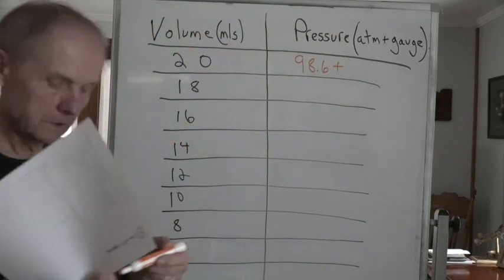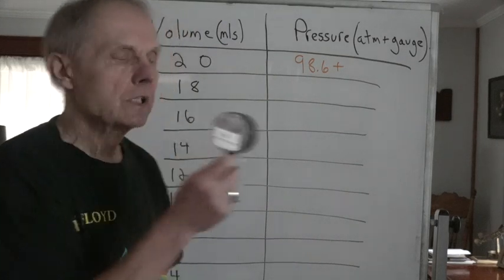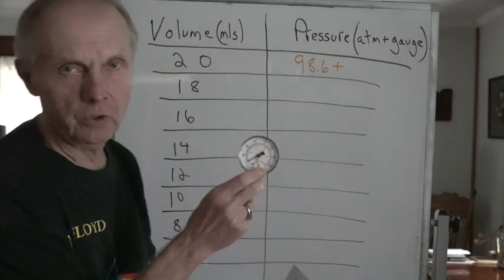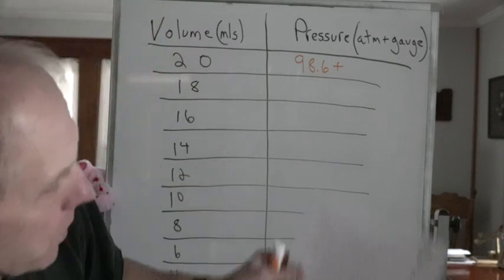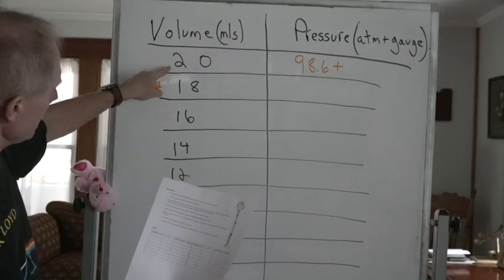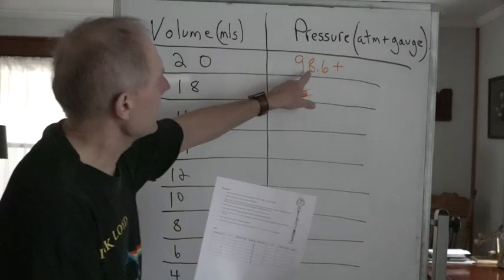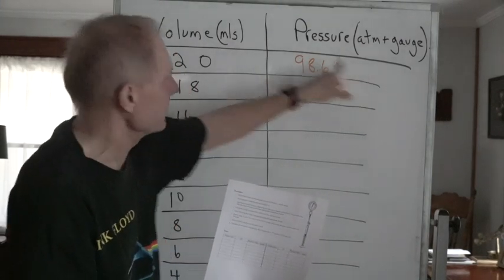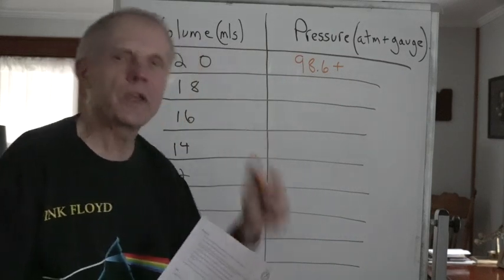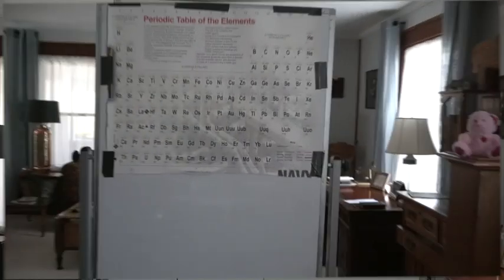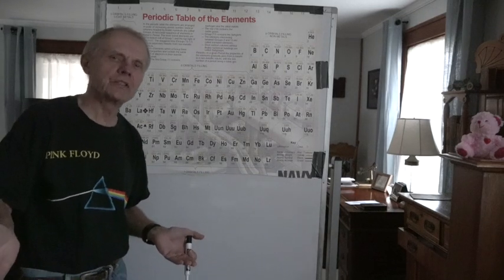Over here it goes 'pressure, atmosphere plus gauge.' We know that the pressure in Elmira we just found—it is 98.6. Plus, now we're going to look at this gauge, and this gauge is going to be in kilopascals, so I will be reading this out to you. So if you want to, you can put 20, 18, 16, all the way down to zero for your volume, and then put 98.6 plus whatever I read. Put 98.6 all the way down. So why don't you do that right now?